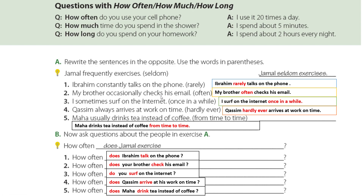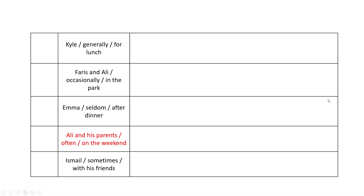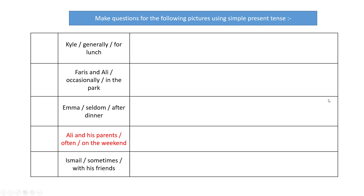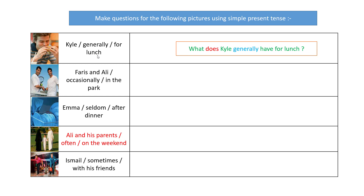Let's move to the next exercise. We're going to talk about the actions of the people in the pictures using the simple present tense. Look at the first example: 'Adnan normally — evening' — 'What does Adnan normally do in the evening? He usually studies.' Now for Mr. Kyle: the task is to make questions for the following pictures using the simple present tense. Number one: 'Kyle generally — for lunch' — 'What does Kyle generally have for lunch?'